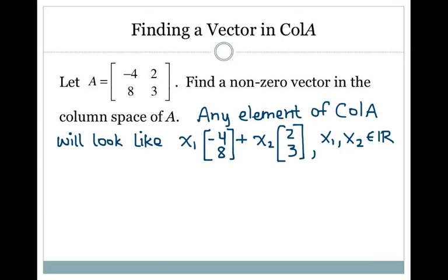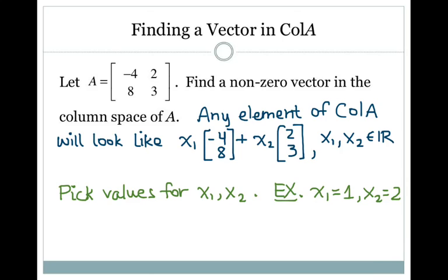Any element of the column space of A will look like x1 times the first column, which in this case is negative 4, 8, plus x2 times the second column, which is 2, 3. x1 and x2 have to be real numbers. I can pick any real numbers — I could have picked pi and e, for example — and I would still have a vector resulting that would be in the column space of A.